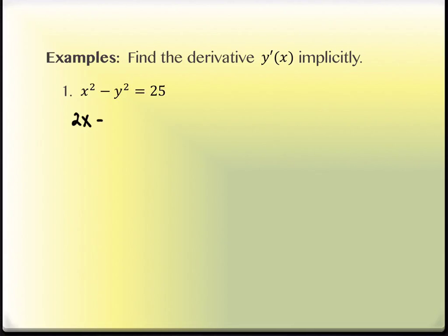If the derivative of x squared is 2x, what do you think the derivative of y squared is? 2y. But here's the catch: y is itself a function. We're treating it like it is. So when we take the derivative of y squared, we've got to put a dy/dx with it. The derivative of y squared is 2y times dy/dx — that's like a chain rule inside. And the derivative of 25 is zero.